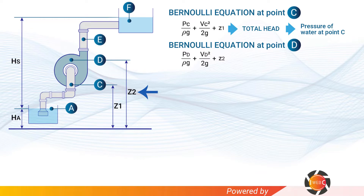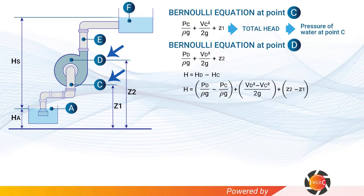To calculate the total head of the pump, I subtract the total head at point C from the total head at point D: H = hD − hC, which gives: (pd − pc)/(ρg) + (vd² − vc²)/(2g) + (z2 − z1).